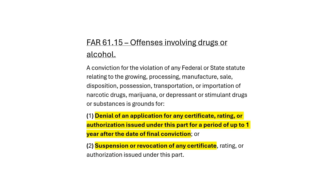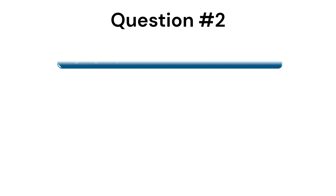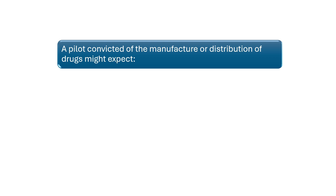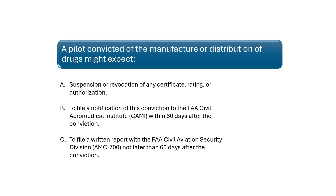FAR 61.15 covers offenses involving drugs or alcohol. Any conviction for a violation of any federal or state statute relating to the manufacture or sale of narcotics, marijuana, depressants, or stimulant drugs will result in the denial of an application for any certificate, rating, or authorization for a period of one year after the date of final conviction, or a suspension or revocation of any certificate, rating, or authorization.